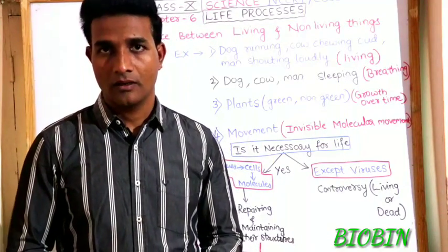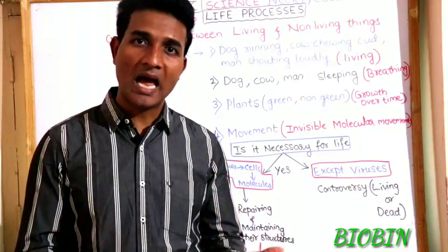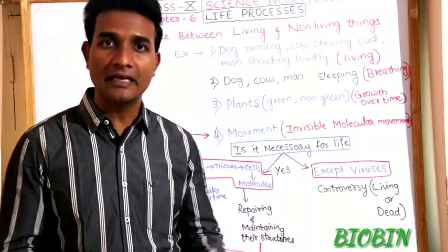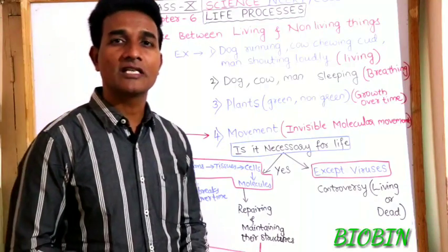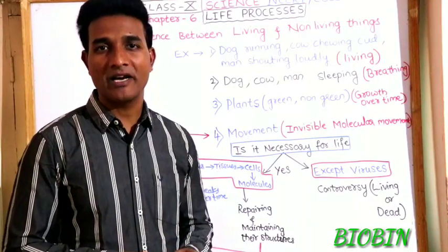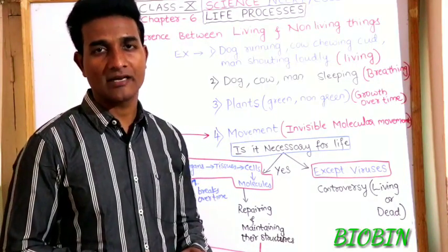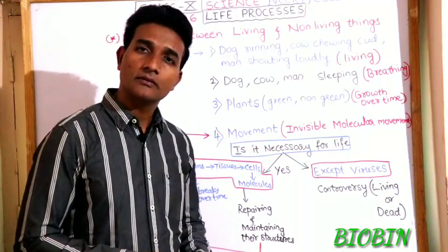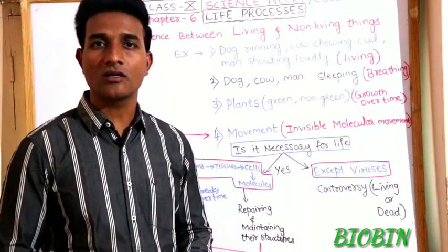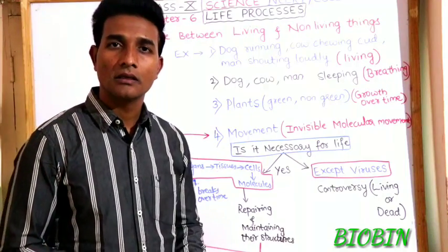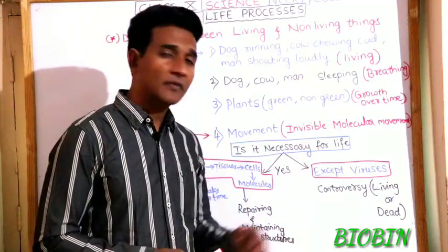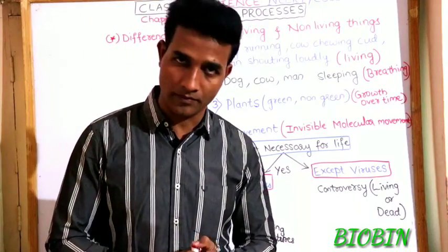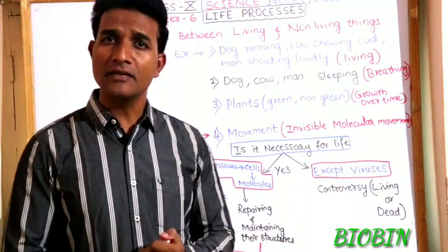What about plants? We say they are living organisms because they are green in color. But what about plants which have a color other than green? Then we take growth over a period of time as an important character of living organisms. Movement is also one of the important characters of living organisms.